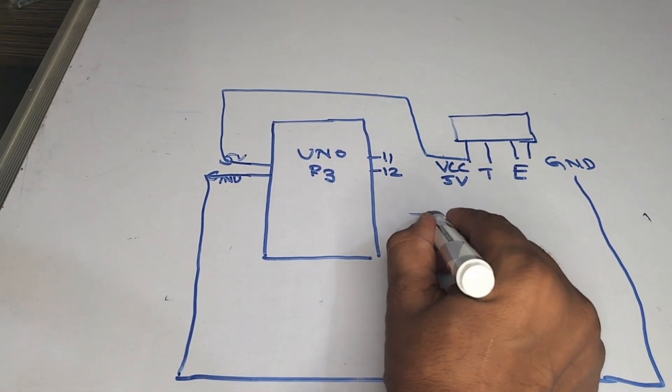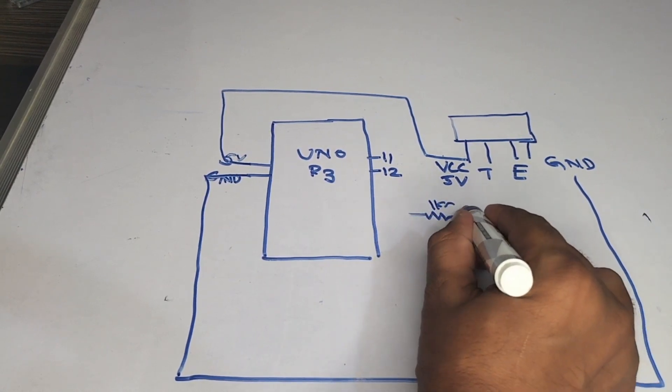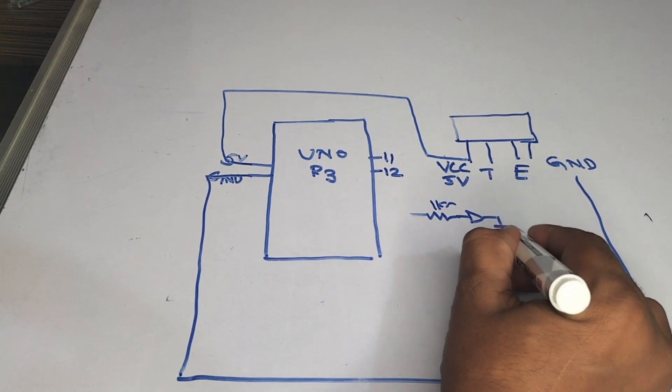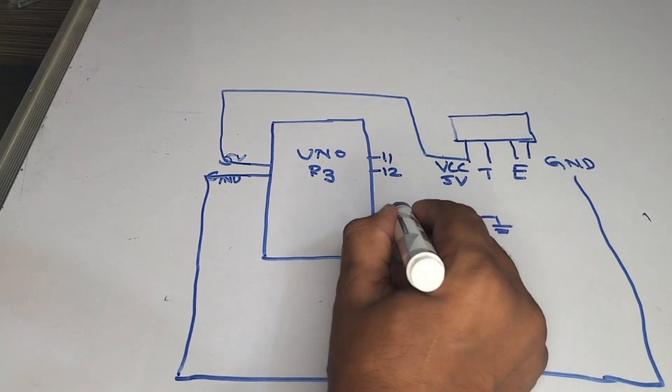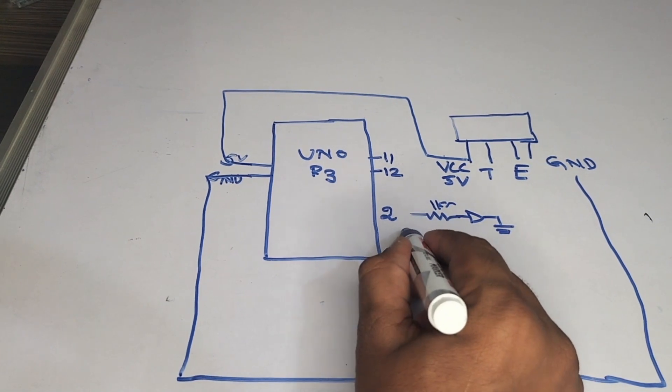So here I am taking three resistors with 1k. And here I am connecting the red LED, and the other side will be the ground. This is going to the second pin of the Arduino.